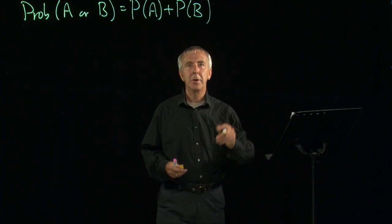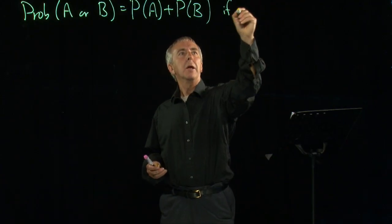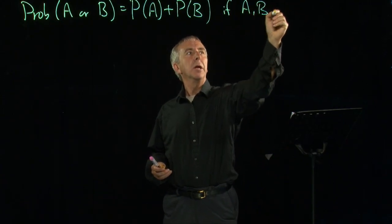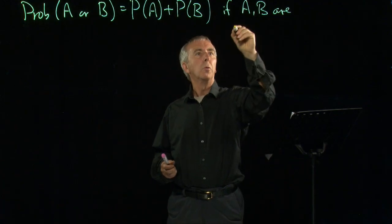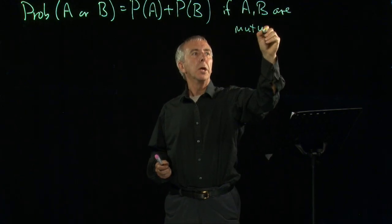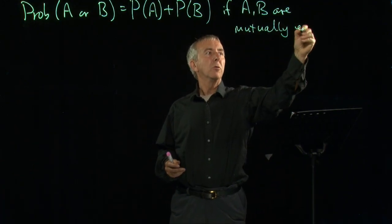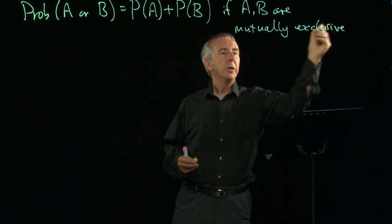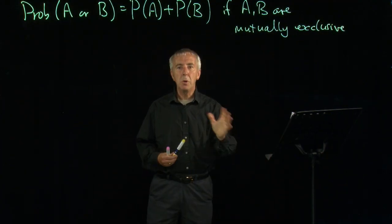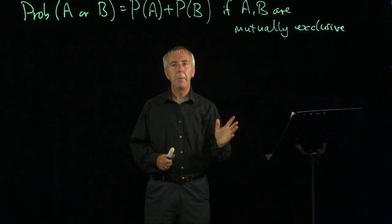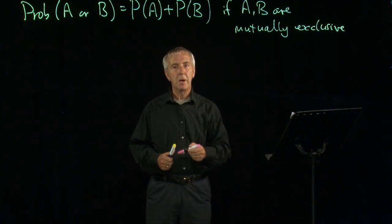A and B cannot happen together. If A and B are what's called mutually exclusive, which is exactly what it says, they mutually exclude each other. If A happens, B can't happen and vice versa.